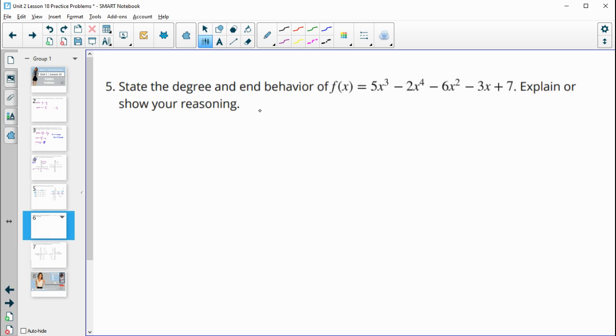Number five, state the degree and end behavior of this polynomial function. So when we're using polynomials, we care about the leading term or the term with the highest exponent. So our leading term here is negative 2x to the fourth. That tells us our degree, which is the exponent. So our degree is 4. And then our end behavior will deal with that this exponent is even. And our leading coefficient here is negative.